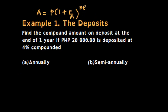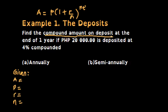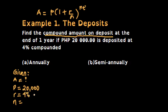Let us write all the given. A is missing; P is 20,000 pesos; R is 4% which is 0.04 in decimal; N is 1 since it is compounded annually; and the time T is 1 year. The goal is to find the accumulated amount A at the end of one year.